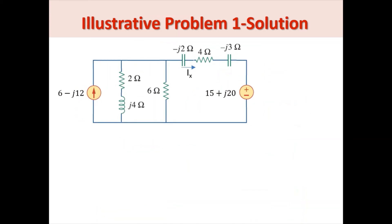Here is our new transformed circuit. Before we proceed, I have to remind you that in doing the simplification, we need to maintain our variables — the parameters we need to compute — so that they won't disappear from the circuit. Otherwise, we would have a hard time computing for them. Here we are able to maintain that variable; it is still there.